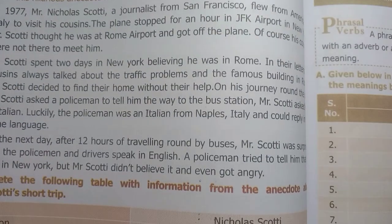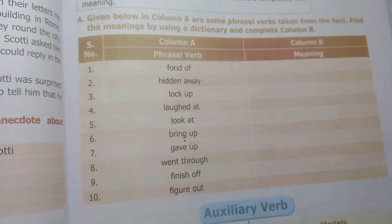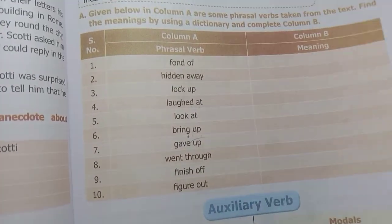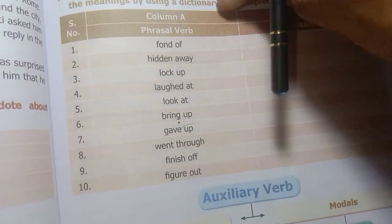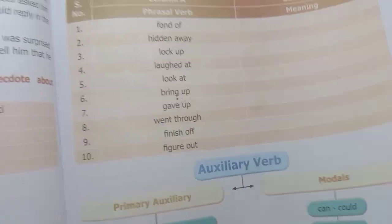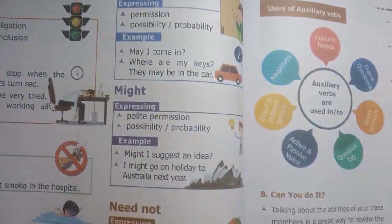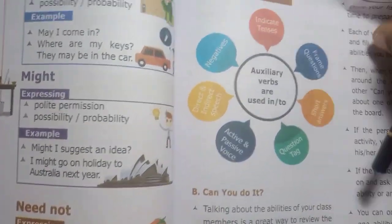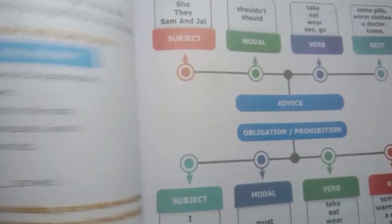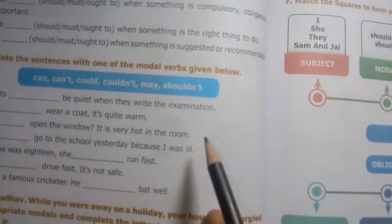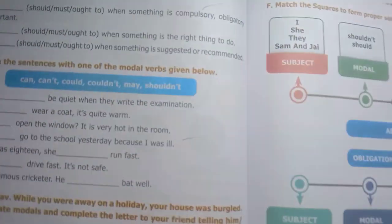Grammar part: phrasal verb and its meaning — look at them. Next: verb forms (B-form verbs), auxiliary verbs, models, and then use of auxiliary verbs in the grammar part.